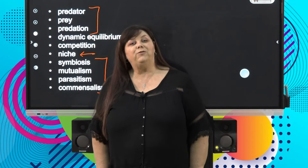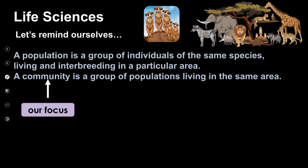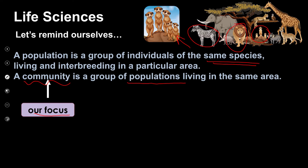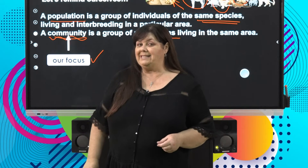We've got a full basket of goodies ahead. Let's remind ourselves of what we already know. A population is a group of individuals of the same species — there's our population of little meerkats. We're also focusing in this lesson on communities. Remember that communities are a whole lot of different populations — lions, zebra, and meerkats. We're looking at how communities, which are different populations, interact with each other.